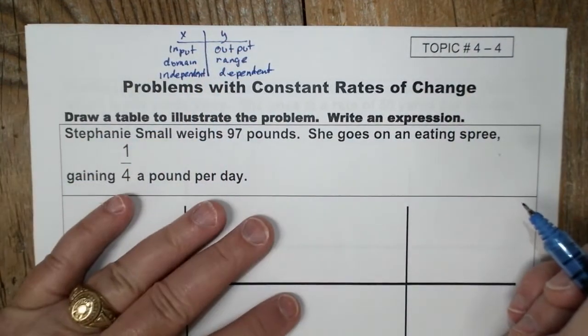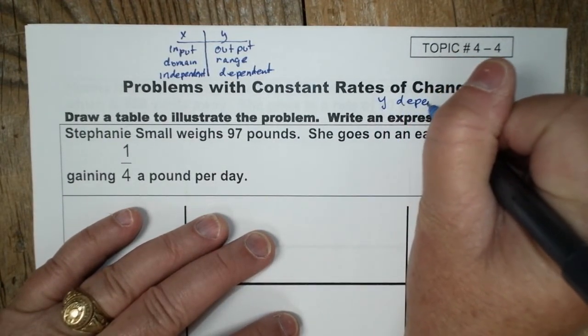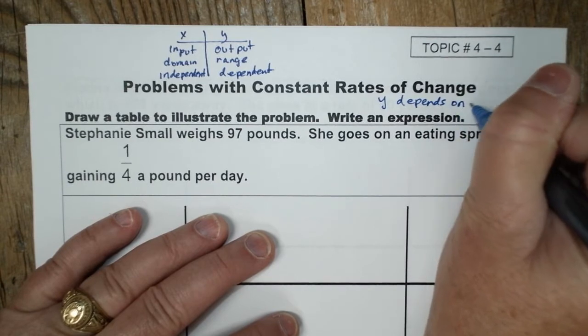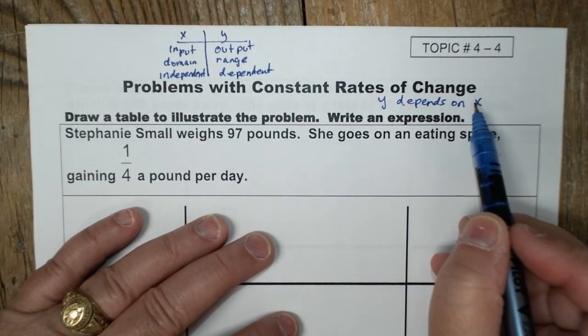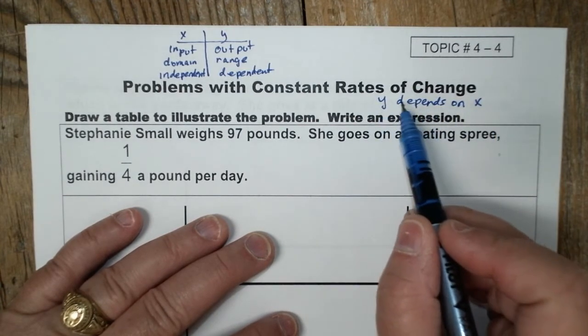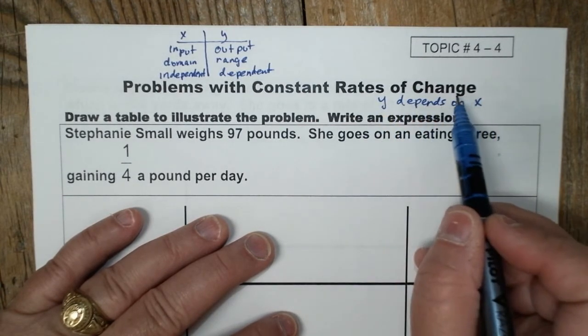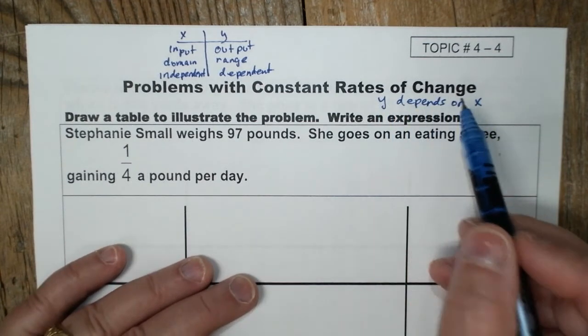We're going to learn a new one and that is X is independent and Y is dependent. Another way to say that is Y depends on X, or whatever number you pick, you only can find out Y if you know X because usually that's the input. So Y depends on what you put in for X.